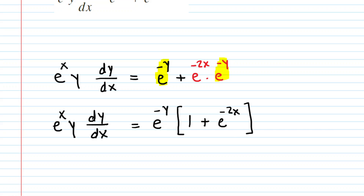Now, in the spirit of separating variables, what we're really trying to do is gather all of the y terms to the left side and the x terms to the right side. So to get the x terms to the right side, perhaps the next move we can make is to multiply both sides of this differential equation by dx. This allows us to cancel the dx out on the left-hand side.